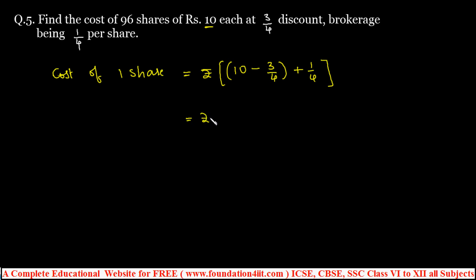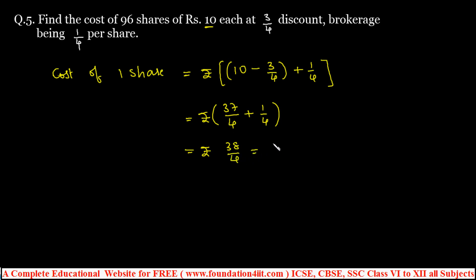Simplifying: 10 − 3/4 + 1/4 = 40/4 − 3/4 + 1/4 = 37/4 + 1/4 = 38/4 = 19/2 = rupees 9.50. This is the cost of 1 share.